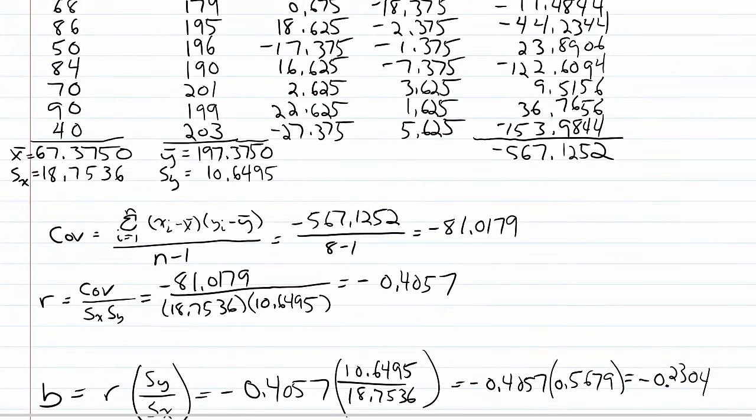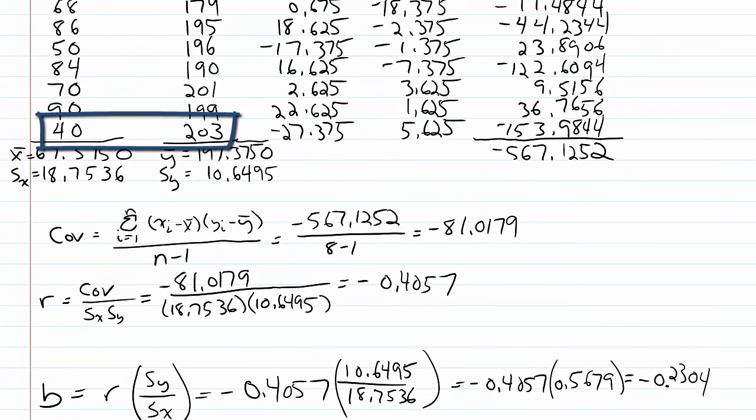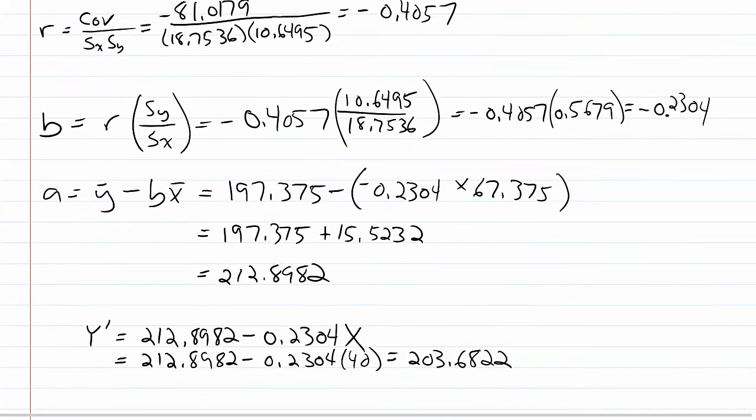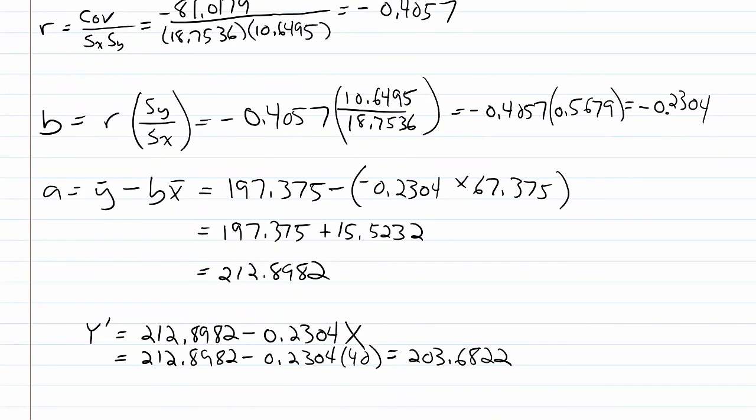If I look back at my data, the last observation had an x of 40, and the actual y value was 203. According to my prediction equation, the predictive value is 203.68.